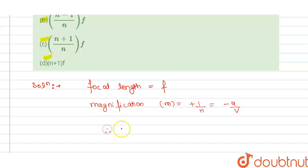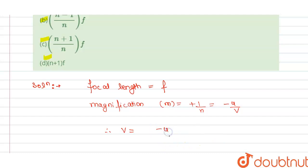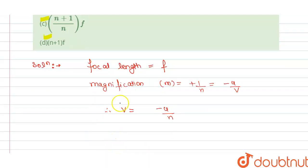From the magnification formula, one by n equals minus v divided by u, so cross-multiplying gives v equals minus u divided by n. Now we apply the mirror formula.